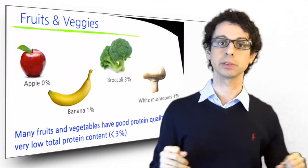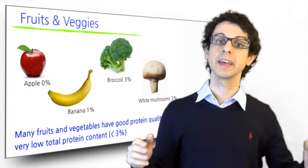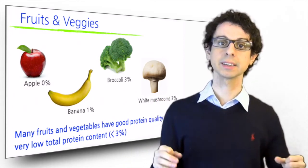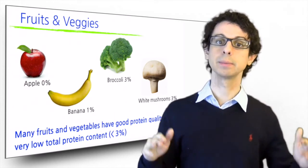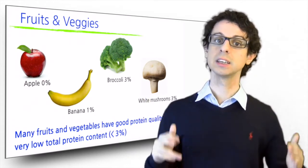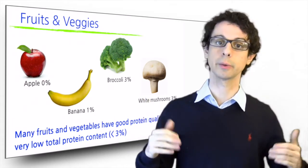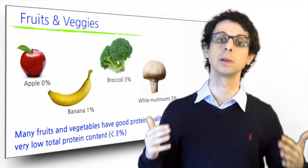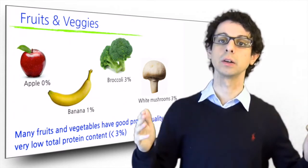Fruits and vegetables have good protein quality but they have very low protein amounts. Fruit is less than one percent, vegetables are slightly higher but still less than three percent. So they certainly contribute to our protein requirement, but we could never get all the protein we need from vegetables alone. We'd need to eat tons.